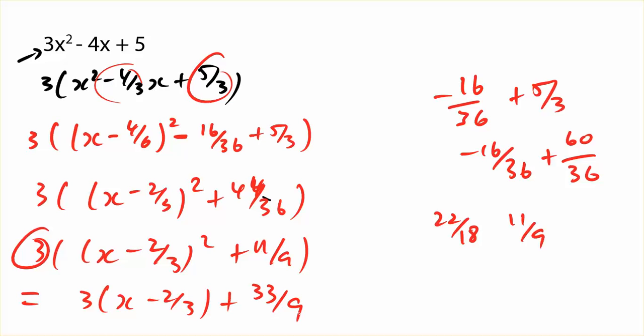And 33 over 9 can be simplified. We know that 3 goes into that 11 times. So I'll re-simplify that. That should be 3, x minus 2 thirds, squared, plus 11 on 3.